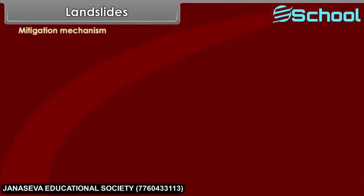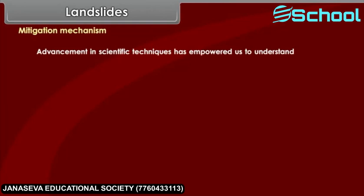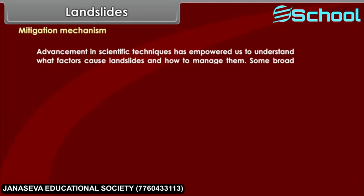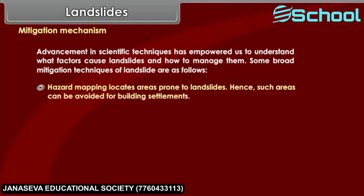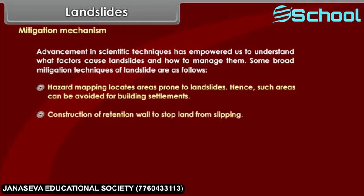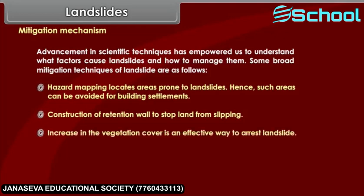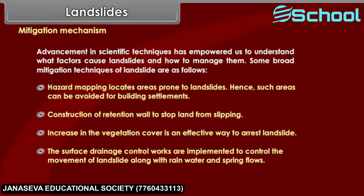Mitigation mechanisms. Advancement in scientific techniques has empowered us to understand what factors cause landslides and how to manage them. Some broad mitigation techniques for landslides are: hazard mapping, which locates areas prone to landslides so such areas can be avoided for building settlements; construction of retention walls to stop land from slipping; increase in vegetation cover as an effective way to arrest landslides; and surface drainage control works implemented to control the movement of landslides along with rainwater and spring flows.